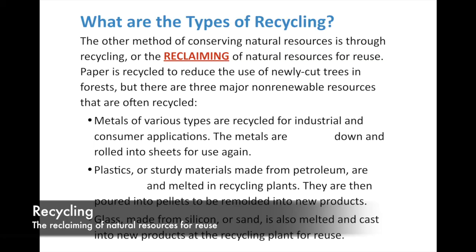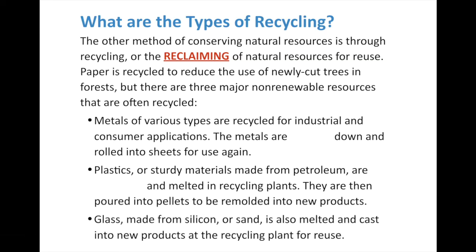We recycle paper to reduce the use of newly cut trees — the more we recycle, the fewer trees we have to cut down. There are three major non-renewable resources that are often recycled. Metals are recycled for industrial and consumer applications — they're melted and rolled into sheets for reuse. Plastics, which are sturdy materials made from petroleum, get chopped and melted in recycling plants, then poured into pellets and remolded into new products. Glass, which is made of silicon or sand, can also be melted and cast into new products at the recycling plant.